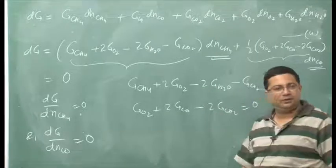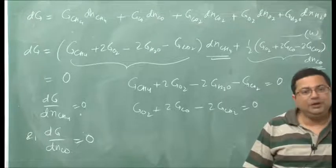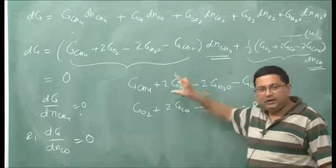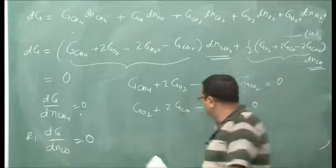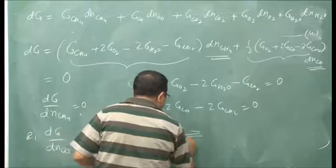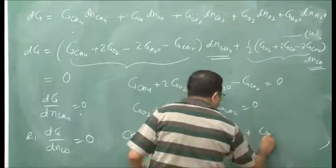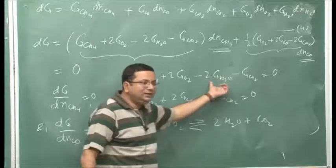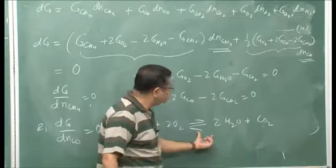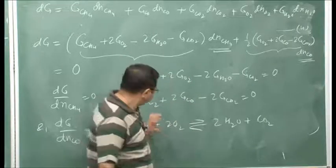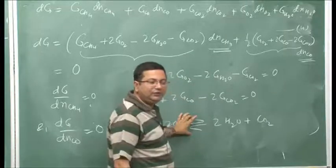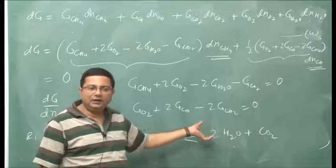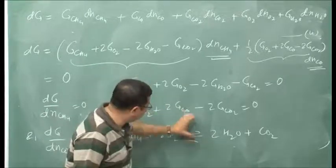Setting each bracket to zero gives two conditions. The first, g_CH4 + 2g_O2 − 2g_H2O − g_CO2 = 0, corresponds to the equilibrium reaction CH4 + 2O2 ⇌ 2H2O + CO2. The second gives another equilibrium reaction. For any equilibrium reaction, the total change in Gibbs free energy delta G is zero.